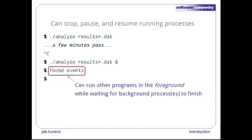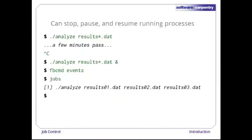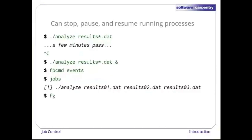Here, for example, we're checking for new Facebook events. Since there's nothing going on, let's run the jobs command. This tells us what processes are currently running in the background. Since we can't think of any other way to procrastinate, we use the foreground command fg. This brings our background job into the foreground.